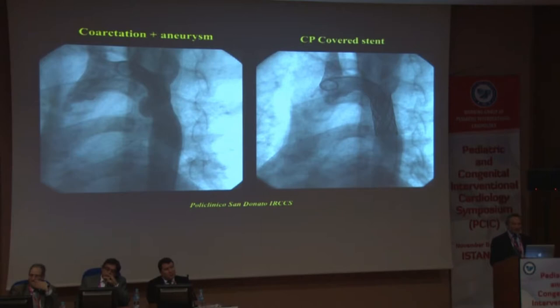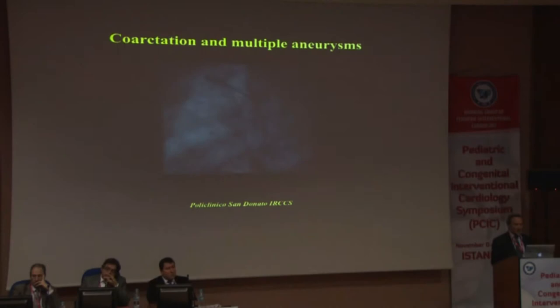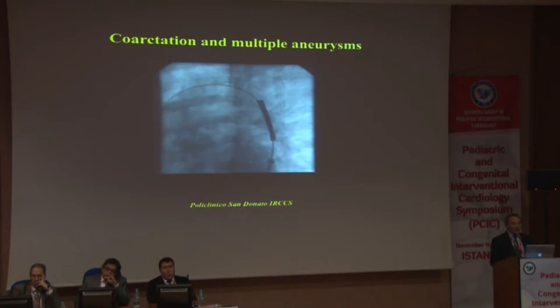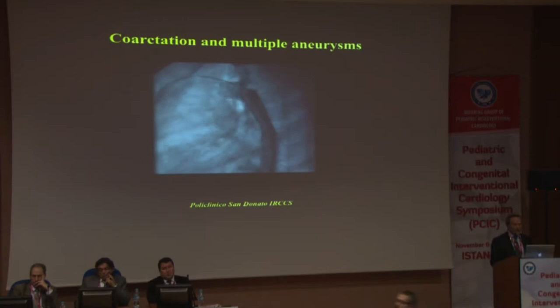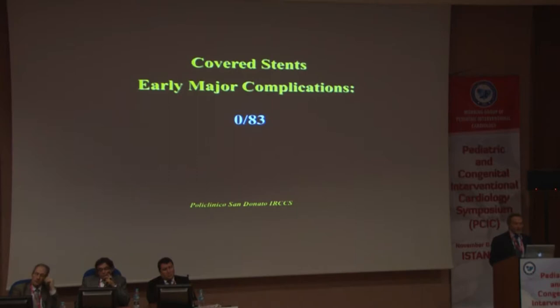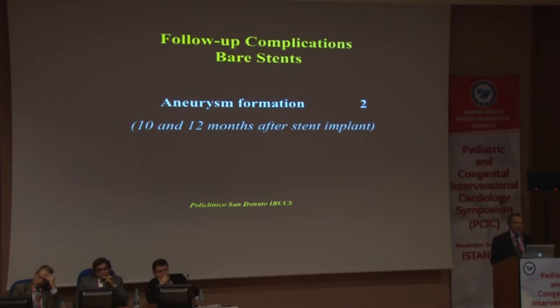Cover stents offer additional advantages, such as treating patients with aneurysm. In one patient, the cover stent resolved both the mild obstruction and the aneurysm simultaneously. In another complicated case with multiple aneurysms, a cover stent was implanted with the aim of relieving the obstruction and eliminating the aneurysms as well — the angiogram performed immediately showed no major complication.